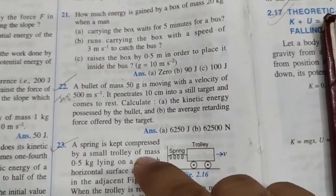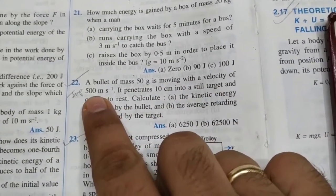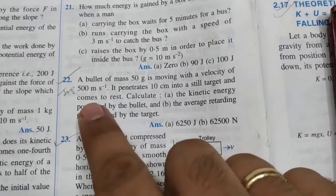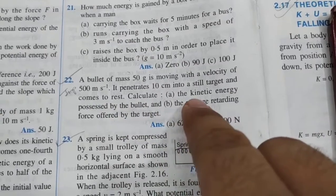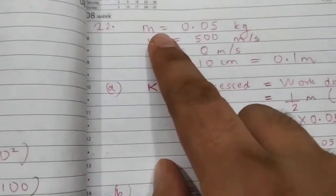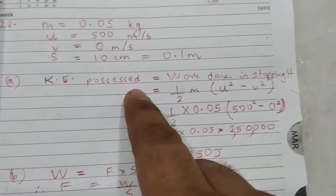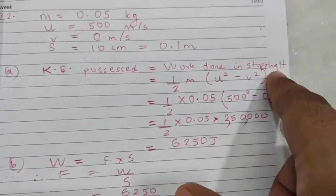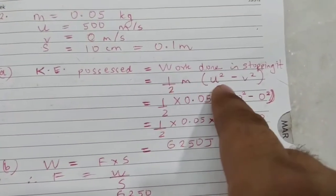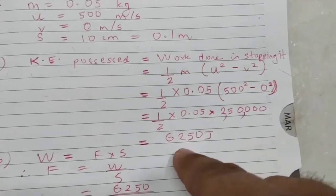The twenty-second sum is IMP. A bullet of mass 50 gram (convert to kg) is moving with initial velocity U. It penetrates 10 cm (0.1 m) and comes to rest — final velocity is 0 m/s. Part A: kinetic energy possessed equals work done in stopping it. By work-energy theorem, take the bigger energy minus smaller energy — that is U squared minus V squared — to get a positive answer. If you get a negative sign, just remove it and note it is the magnitude.